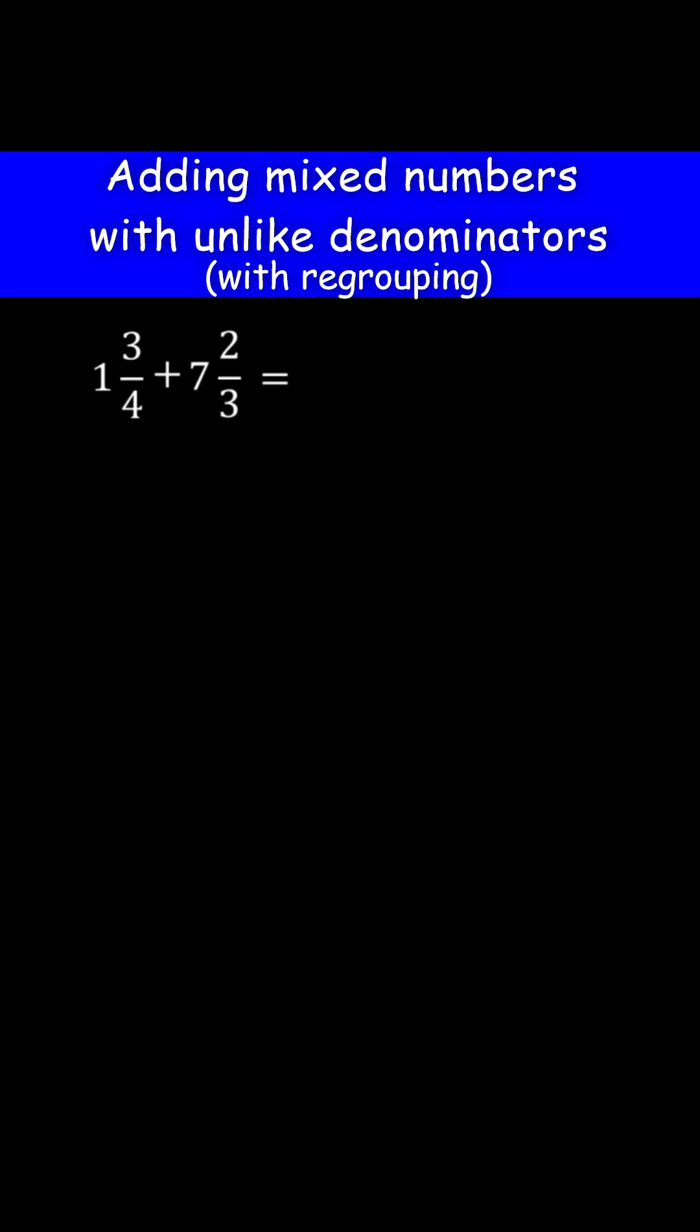To add mixed numbers with different denominators, first expand the mixed numbers. 1 and 3 over 4 is the same as 1 plus 3 over 4. 7 and 2 over 3 is the same as 7 plus 2 over 3.